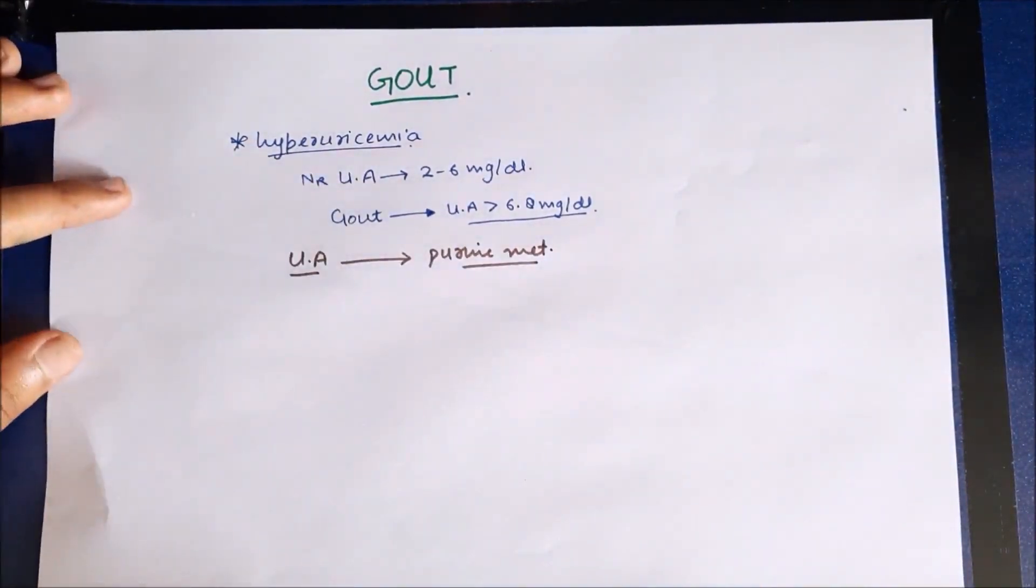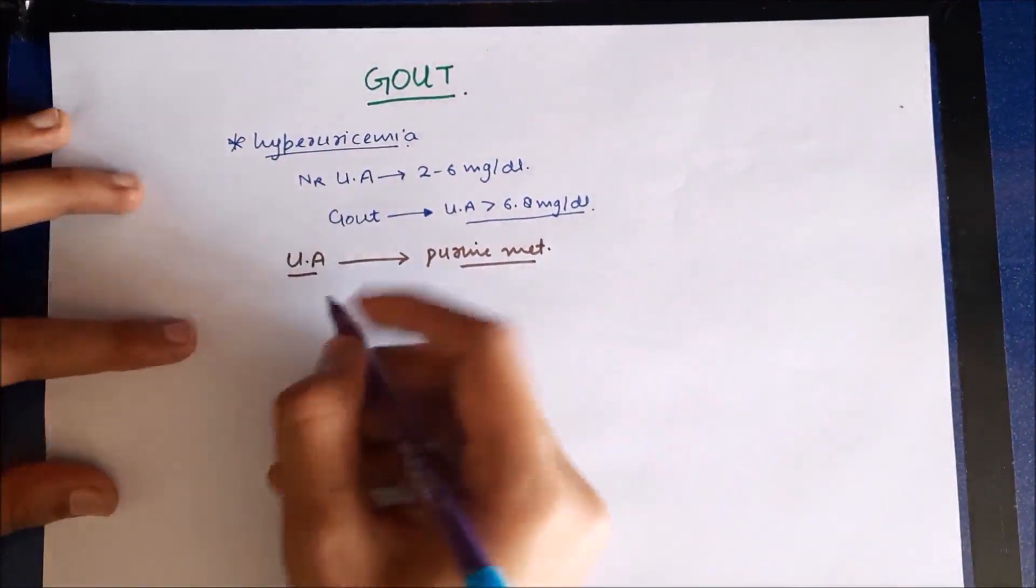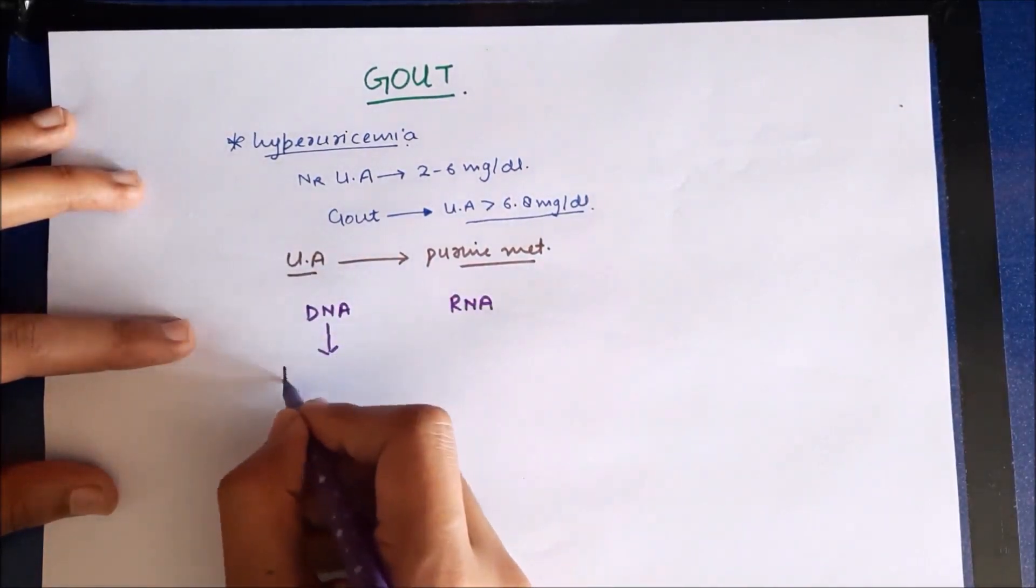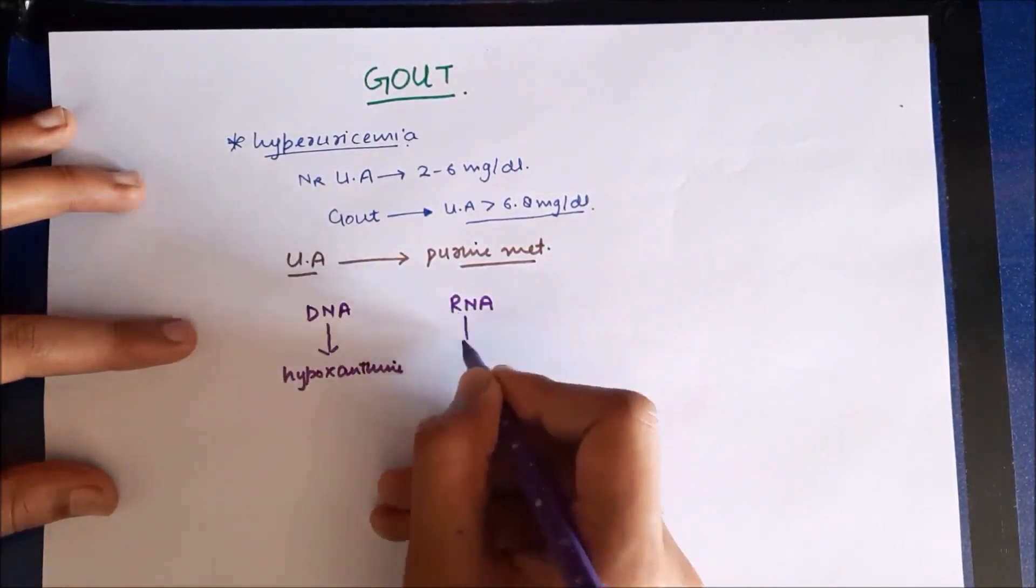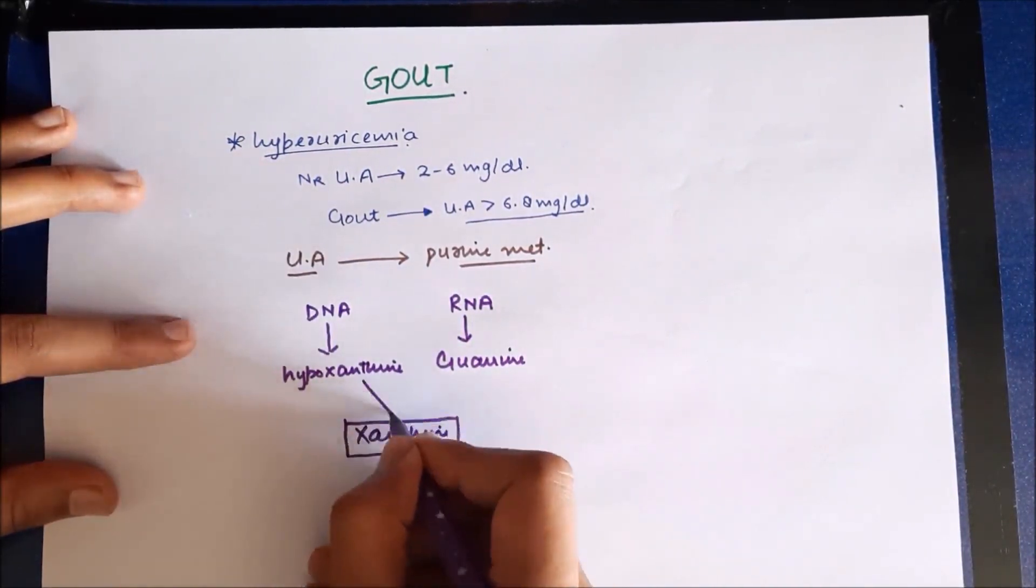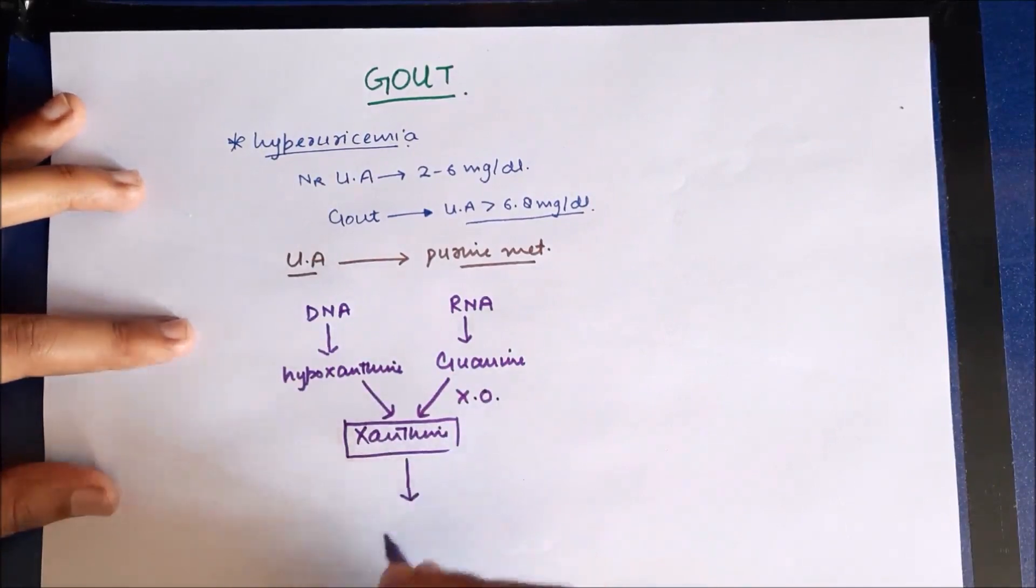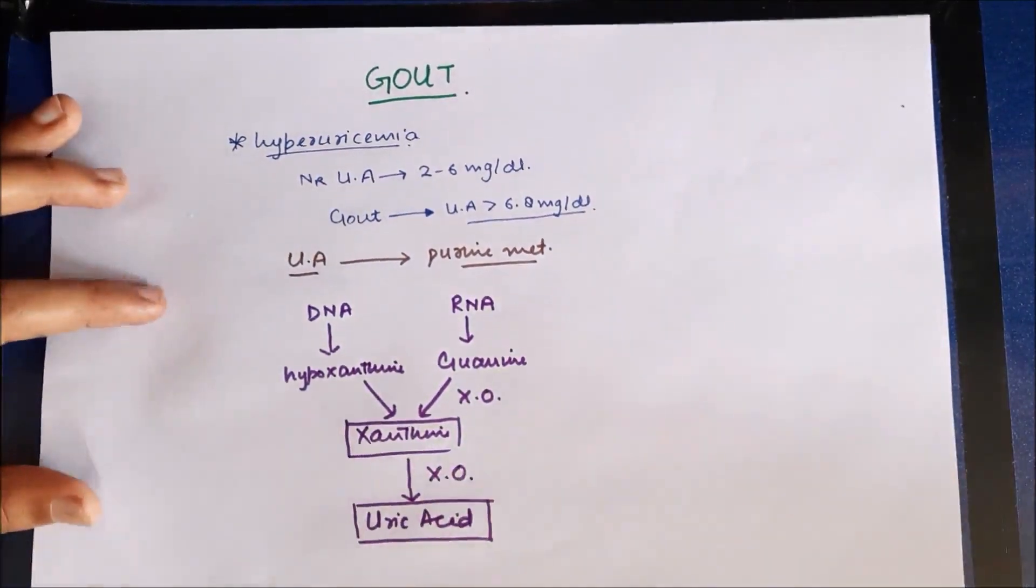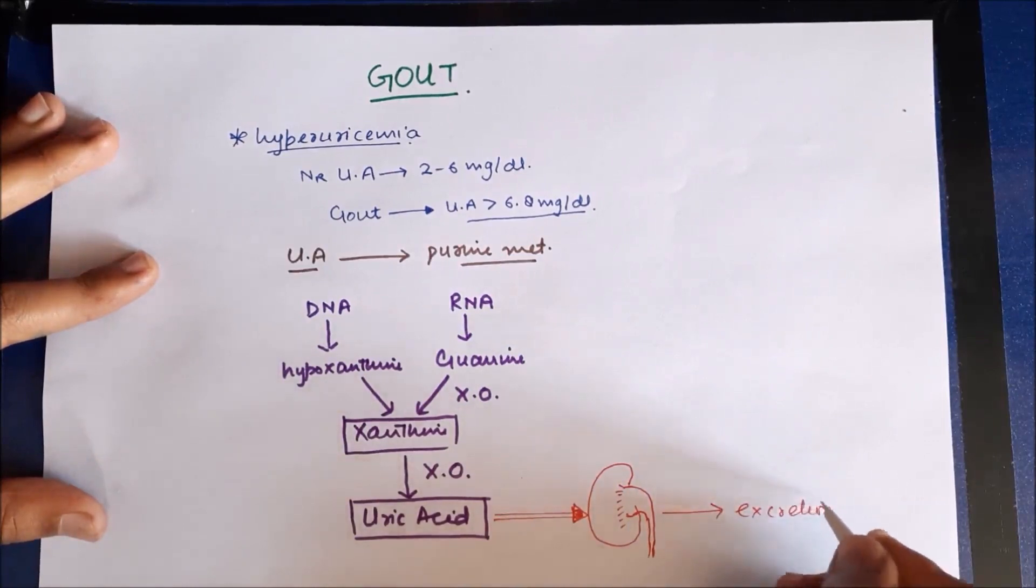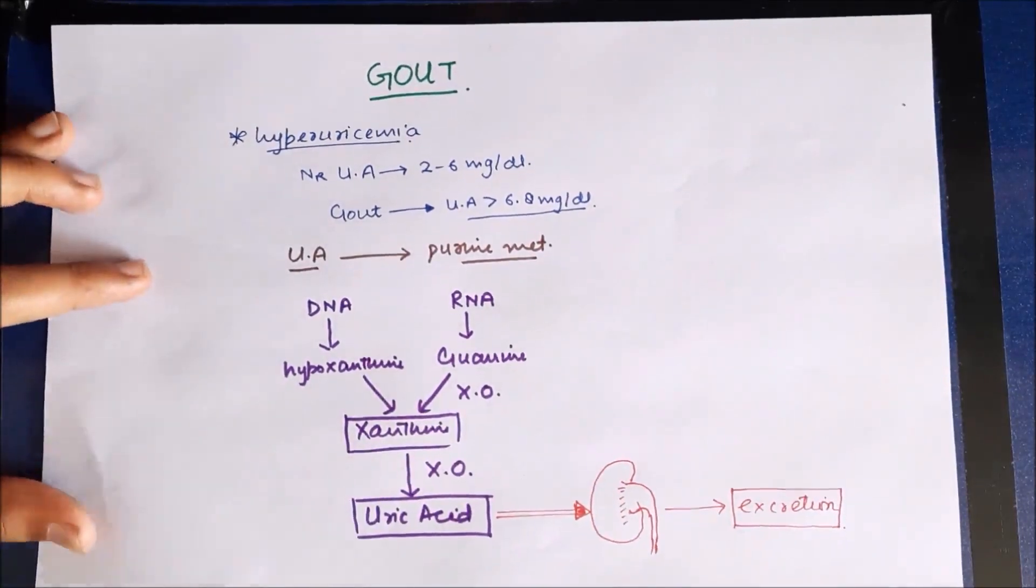Now uric acid is formed as a result of purine metabolism, and the metabolism of nucleic acids such as DNA and RNA results in formation of intermediates such as hypoxanthine and guanine, which are eventually converted into xanthine by enzyme xanthine oxidase. Xanthine oxidase also converts xanthine into uric acid, therefore xanthine oxidase is an important enzyme in purine metabolism. Uric acid is excreted by kidney in the urine and some part of uric acid is also reabsorbed.